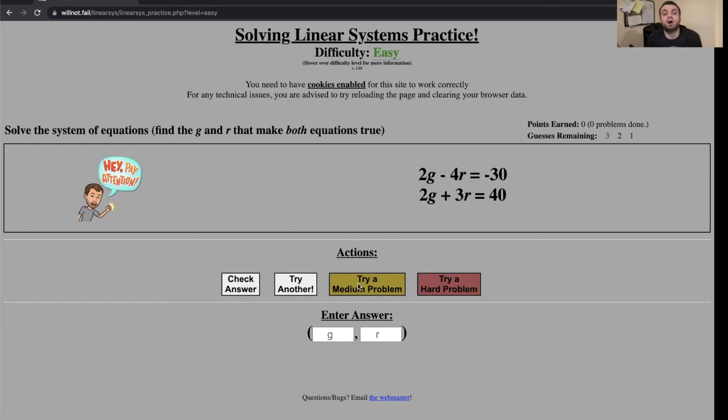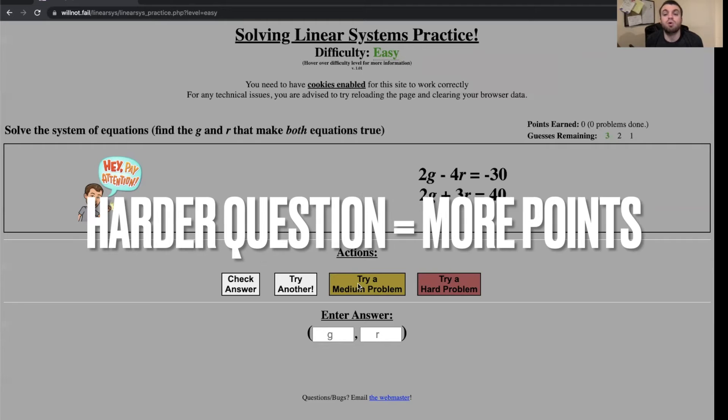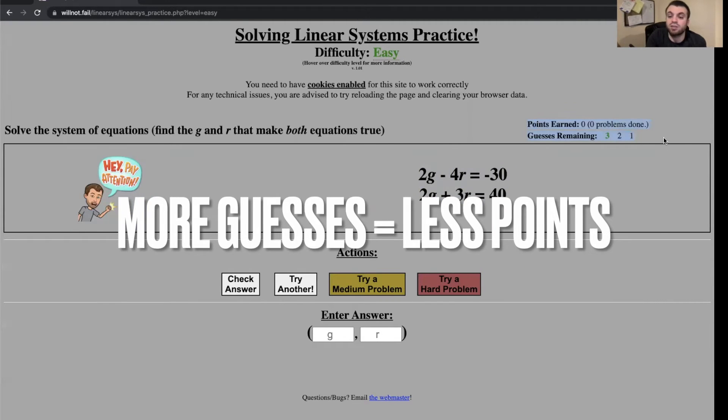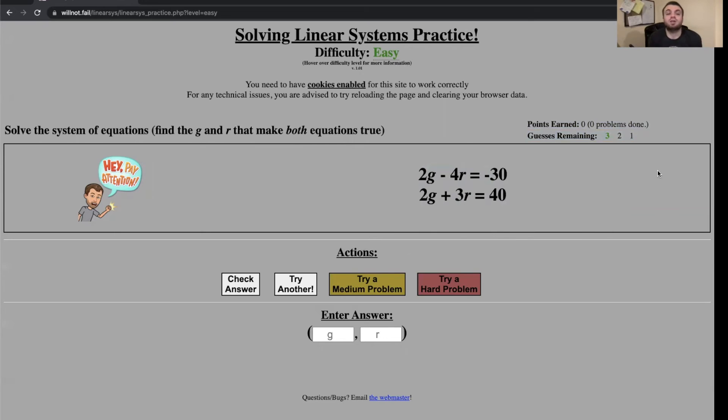The harder problem you choose, the more points you can earn. You'll see it says points earned and guesses remaining. For each system you have three chances to get the correct answer. This page will tell you if one or the other is correct, so you'll get the most points by getting the correct answer on the first try.